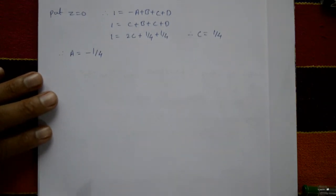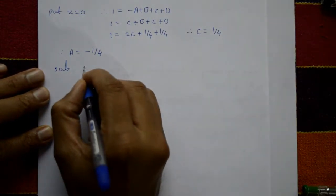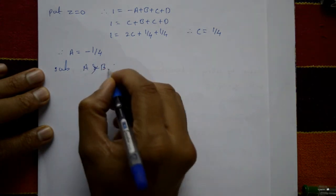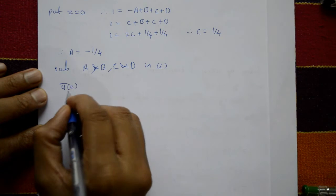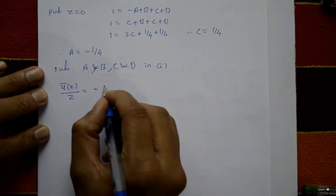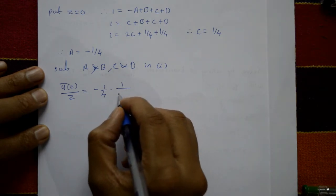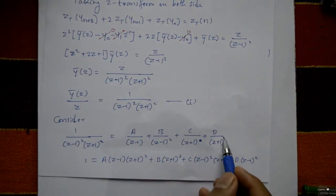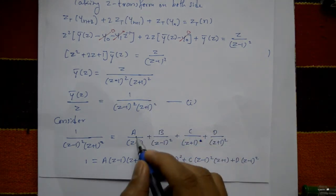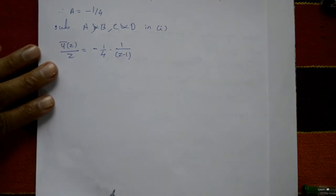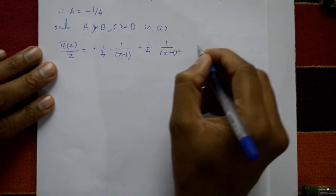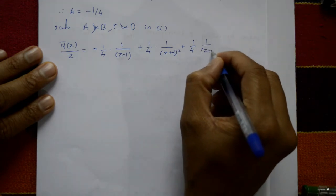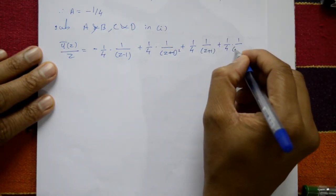Substituting A = −1/4, B = 1/4, C = 1/4, D = 1/4 into equation 1: Y-bar(z)/z = −(1/4)·1/(z−1) + (1/4)·1/(z−1)² + (1/4)·1/(z+1) + (1/4)·1/(z+1)².